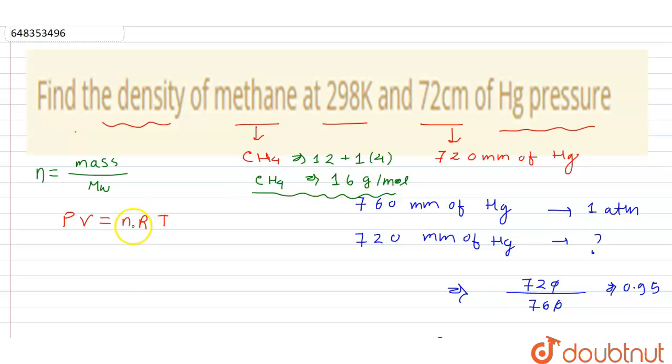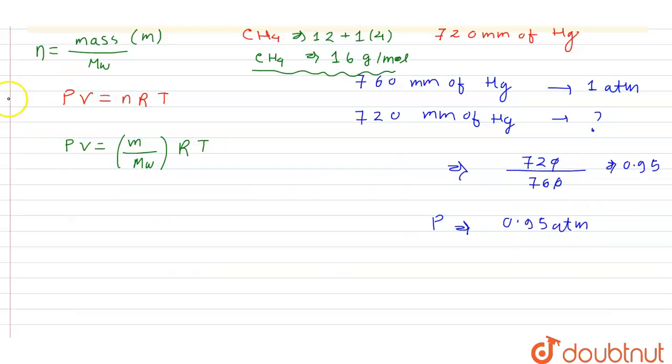We can substitute this into the equation: PV equals m divided by MW times RT, where m is mass and MW is molecular weight. We also know the formula for density.